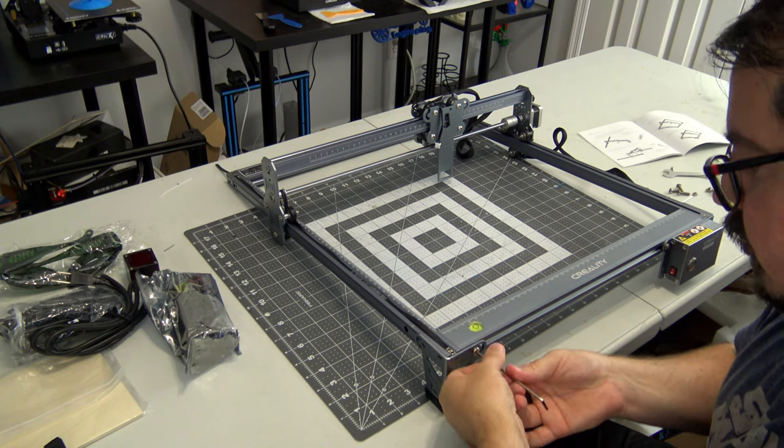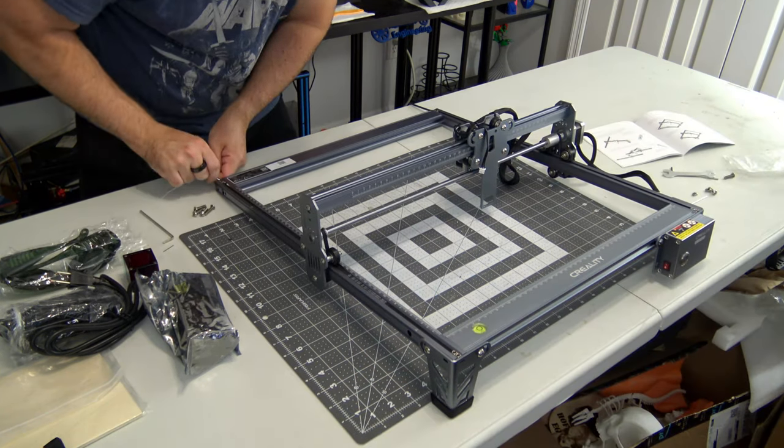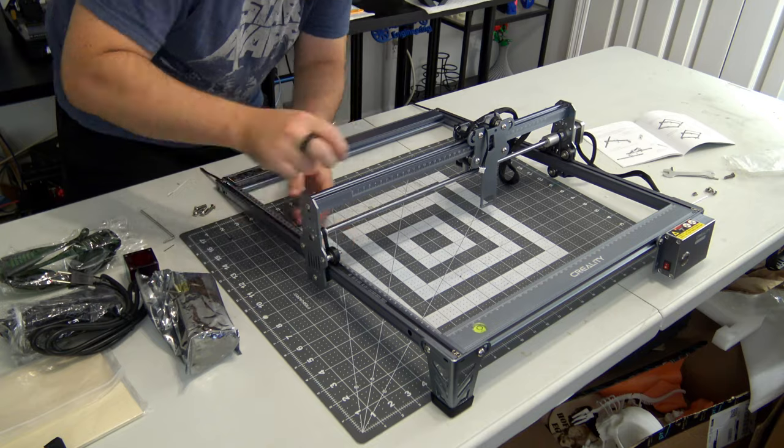Then the y-axis belts were added and tightened, and then assembly completes. It took about 30 minutes to assemble, and the instructions were easy to follow.